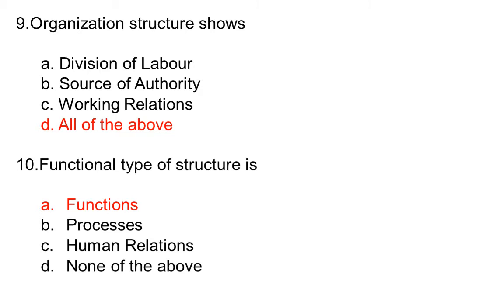Functional type of structure is: option A functions, option B process, option C human relation, option D none of the above. The correct answer is option A, functions.